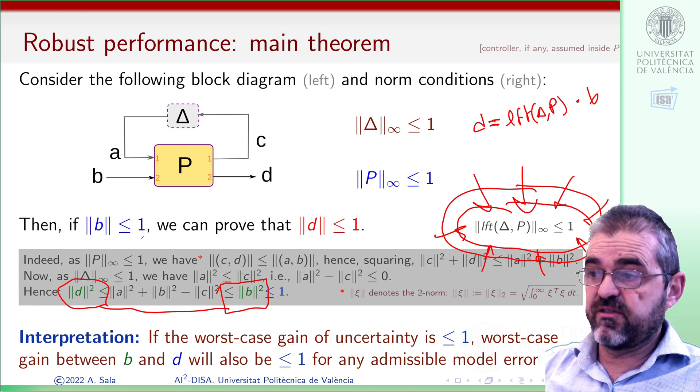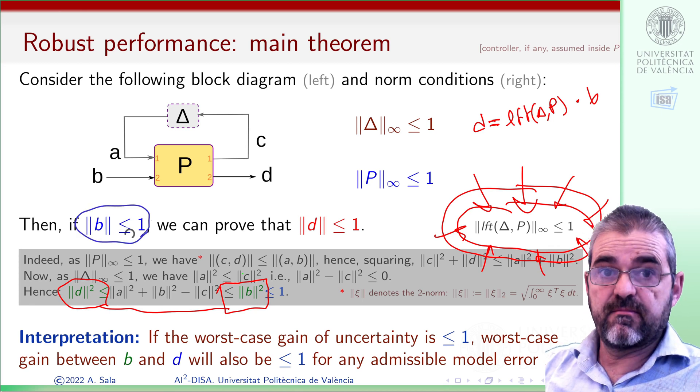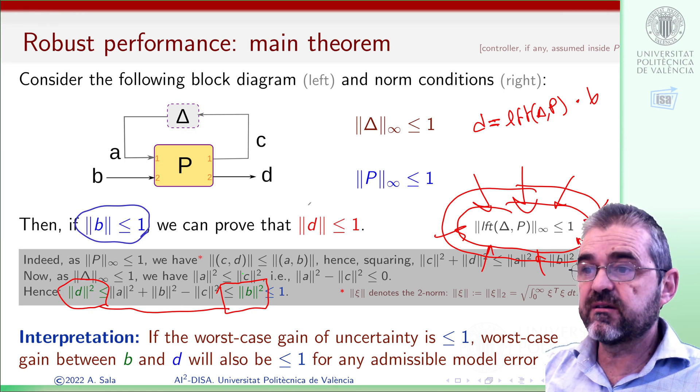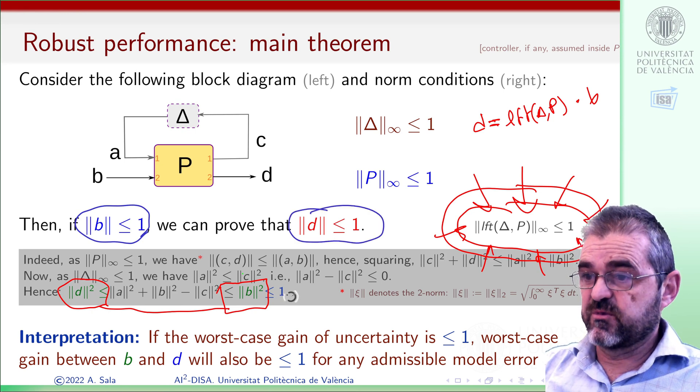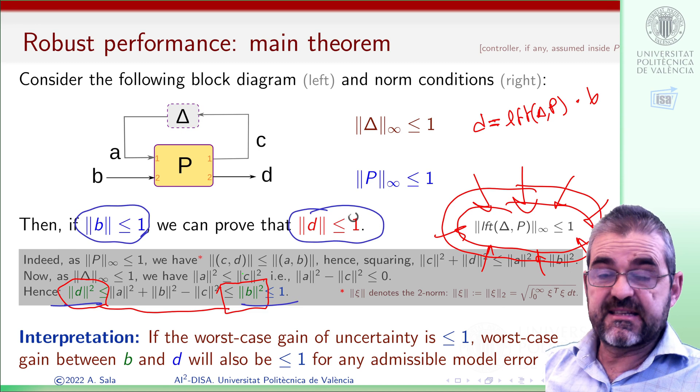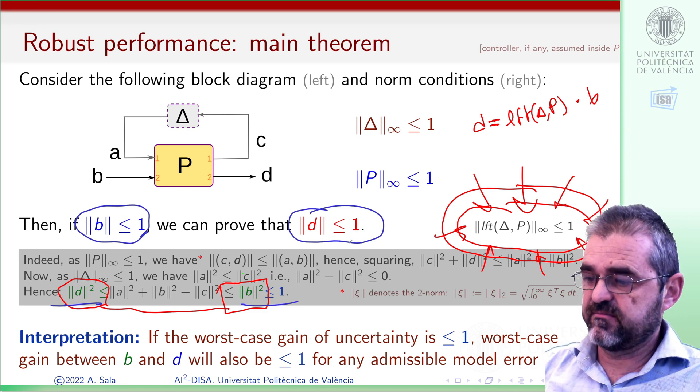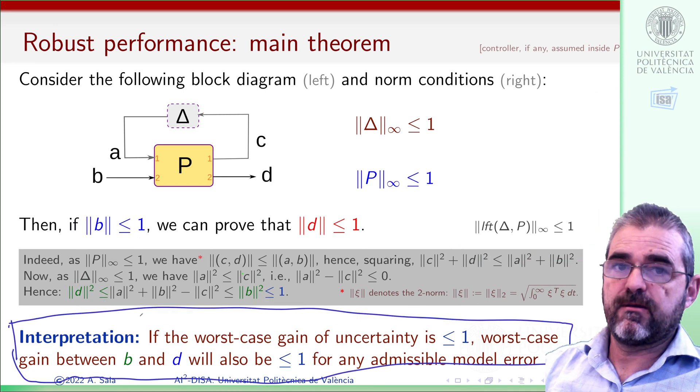So if the maximum size of B is 1, by definition, by our scalings in our problem, then of course, the maximum size of D will be less than 1, which means that our performance goal will be achieved.